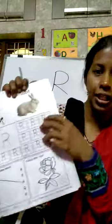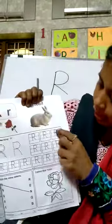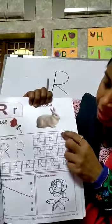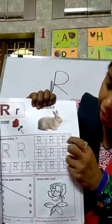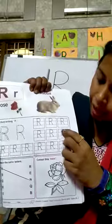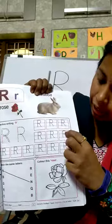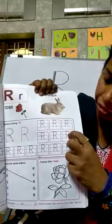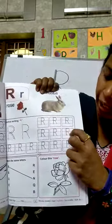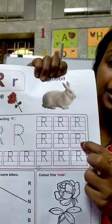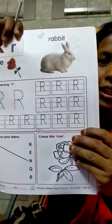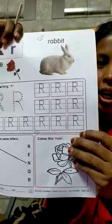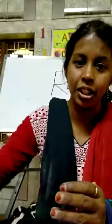Okay children, let's just observe how to write R. Standing line from first red line to second blue line. A curve between first red line to first blue line, and then the slanting line. Capital R. Practice well, children.